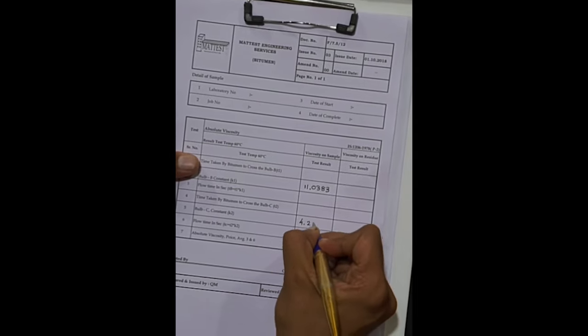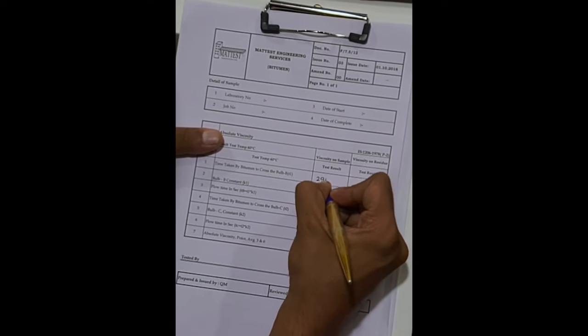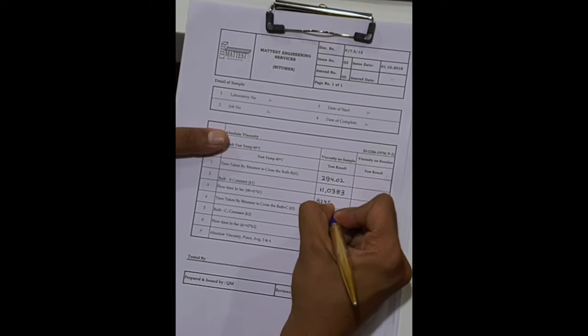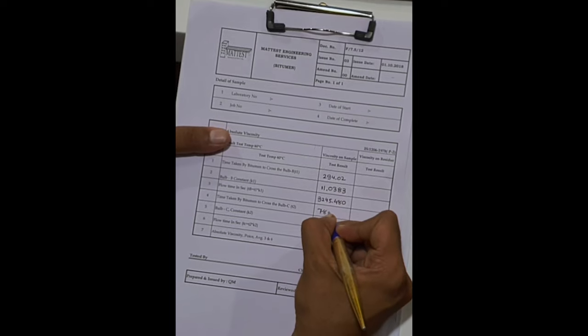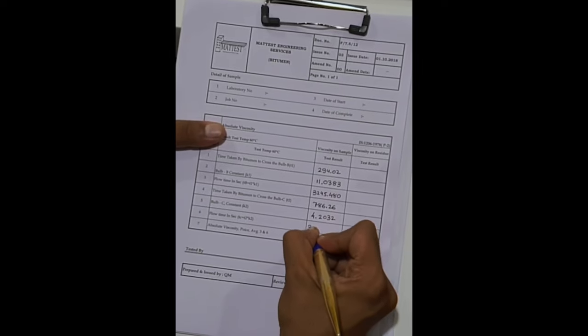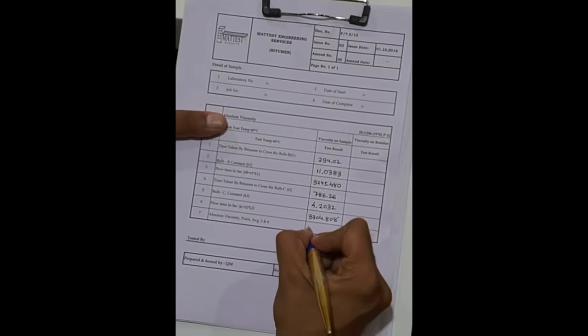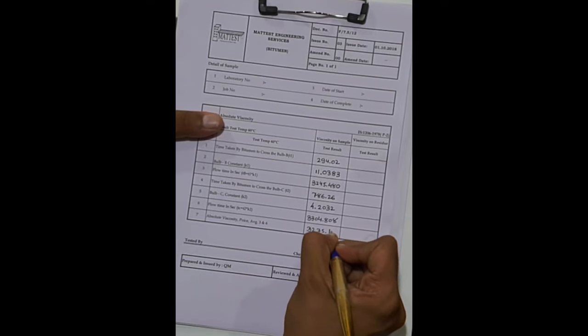Time taken by bitumen to cross bulb B is 4 minutes and 54.02 seconds, which equals 294.02 seconds. The viscosity is 3245.480 poise. Time taken by bitumen to cross bulb C is 13 minutes and 6.26 seconds, which equals 786.26 seconds. Bulb C viscosity is 3304.808 poise. The average of bulb B and bulb C absolute viscosity is 3275.144 poise.